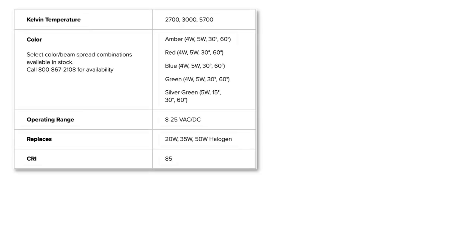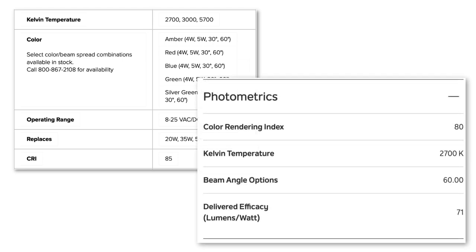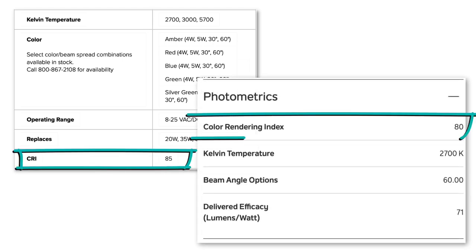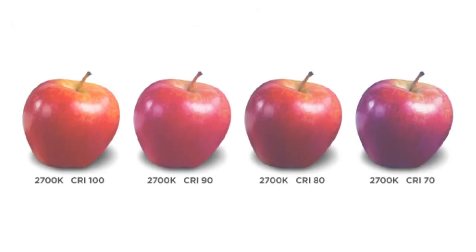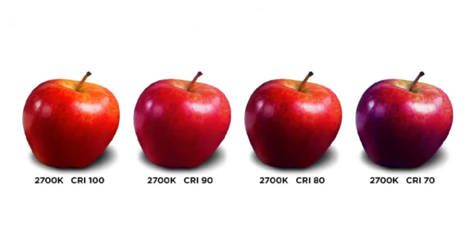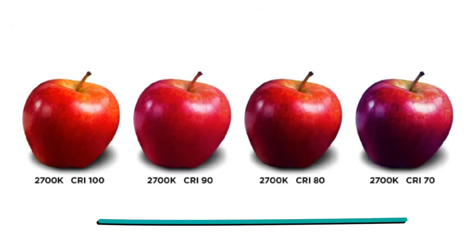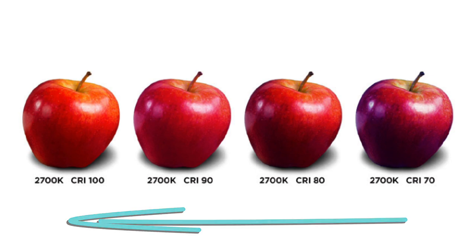In the lighting world, CRI stands for Color Rendering Index. It's a numerical value given to a light source to express the color accuracy of objects illuminated by it. In short, the higher the CRI, the more accurately colors appear under that light source.